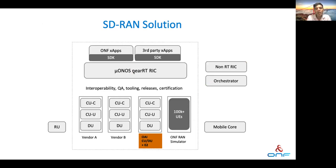Our SD-RAN solution consists of our RIC that hosts X-Apps, both by us and by our partners, and it interworks with O-RAN compliant RAN nodes from multiple vendors. We use OAI-based CU/DU nodes, both on real hardware and simulation, for our own internal CI and dev test purposes, and we also have a simulator that only supports the control plane for scale testing. OAI is a key component that has helped us in verifying and developing our RIC.